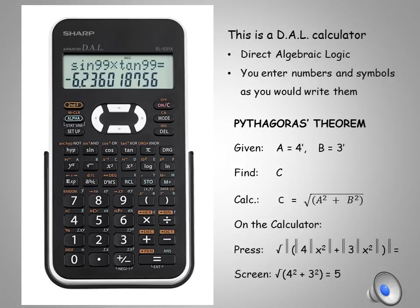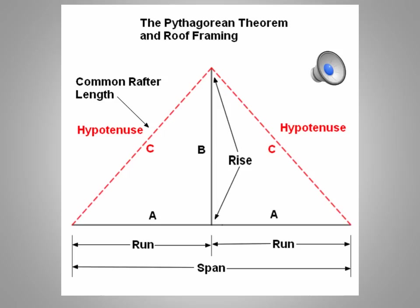On a DAL calculator, you would press the square root button, then open brackets, then 4, then press x squared, plus, then 3, then x squared, then close the bracket, and hit equal. What will appear on the screen of your calculator will be the square root of 4 squared plus 3 squared, which equals 5.